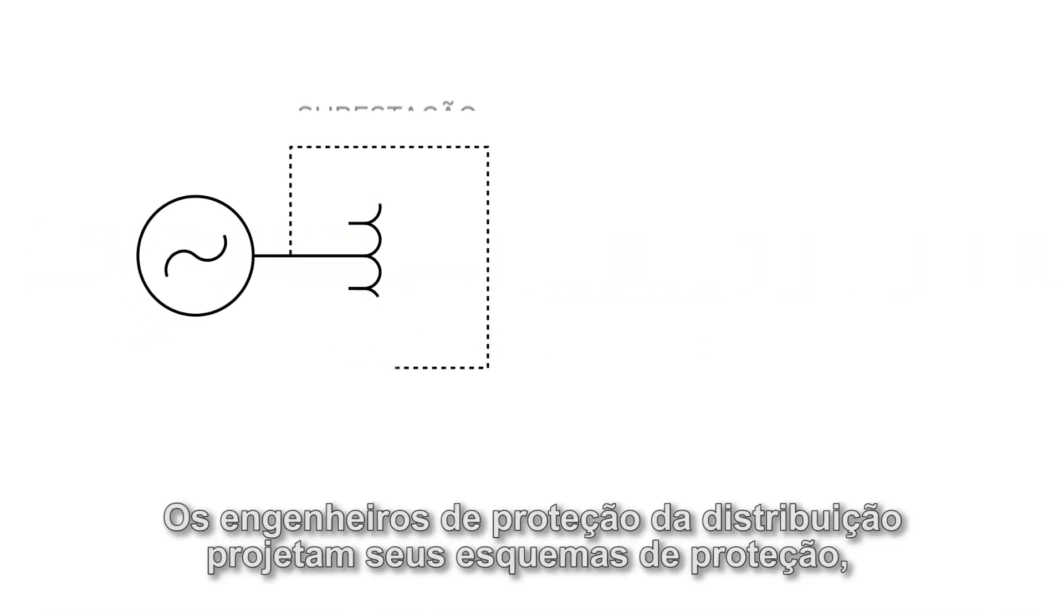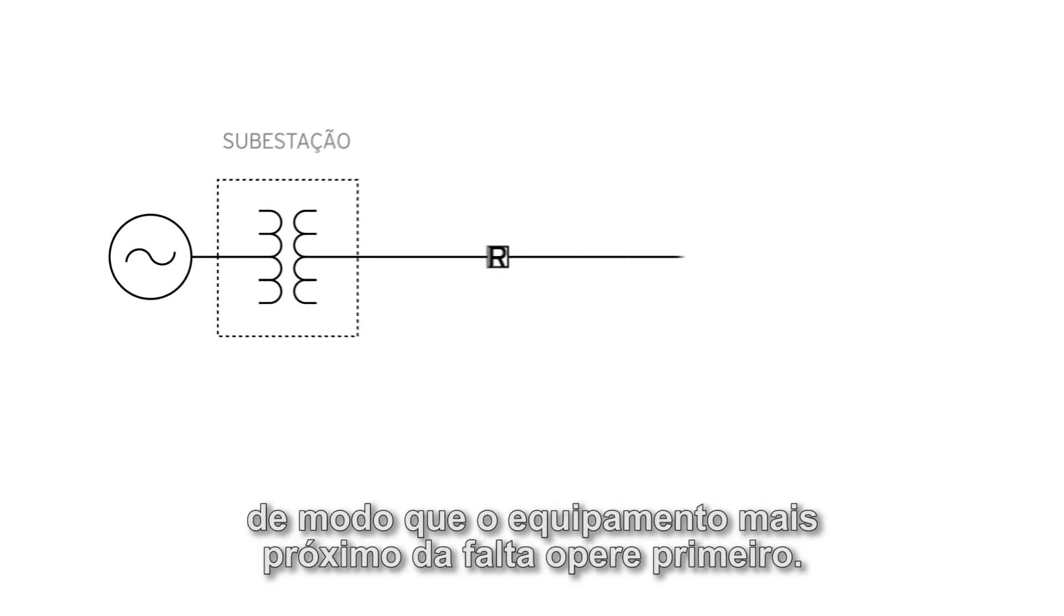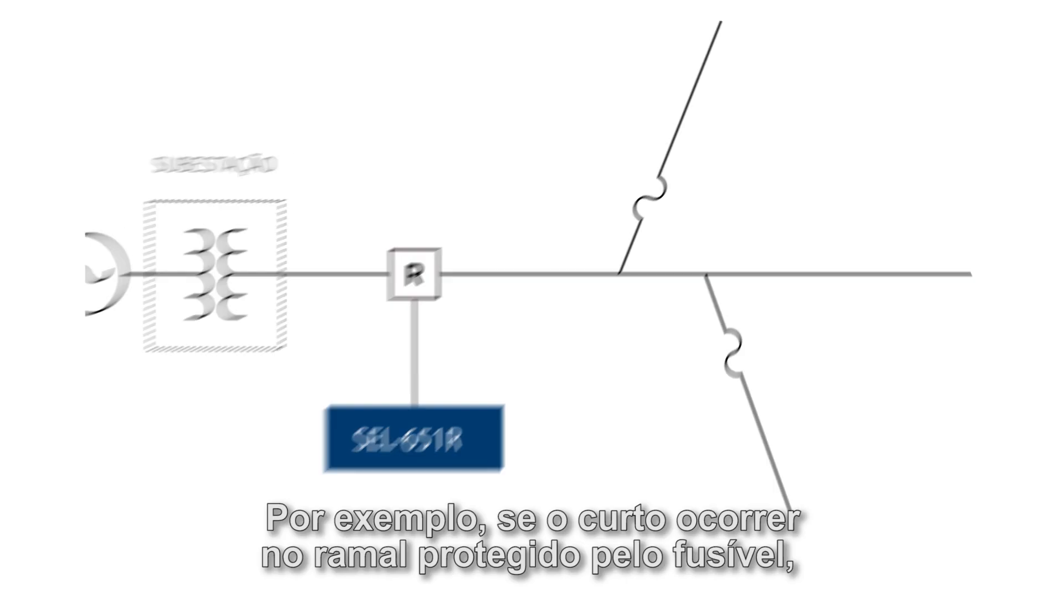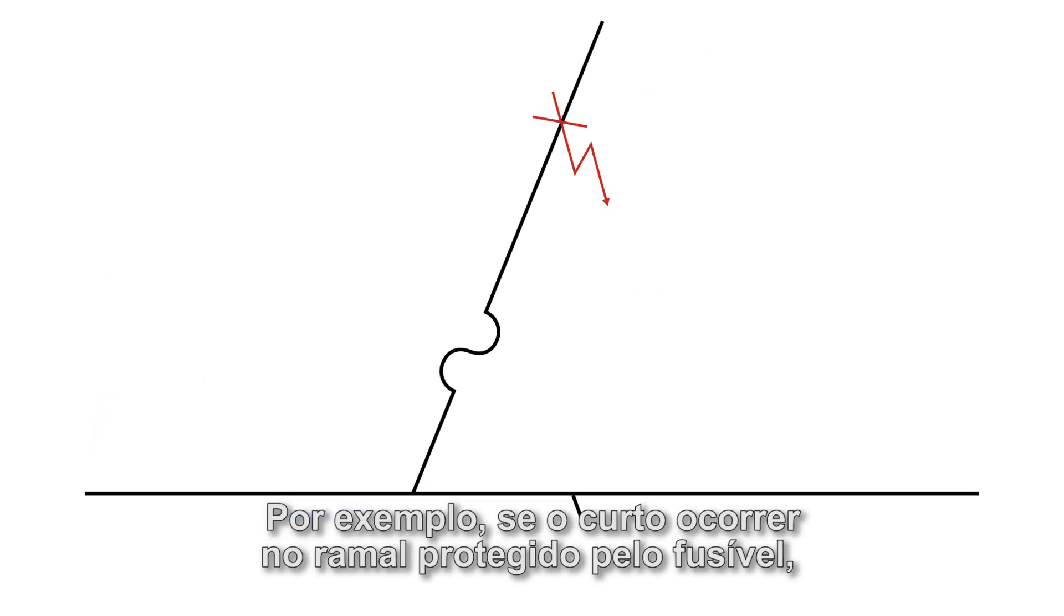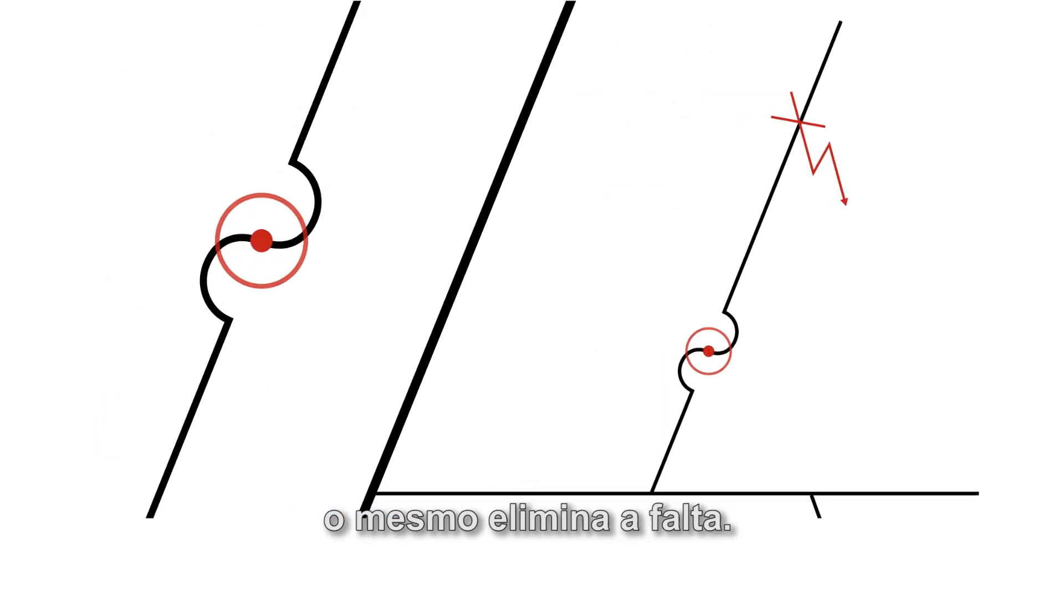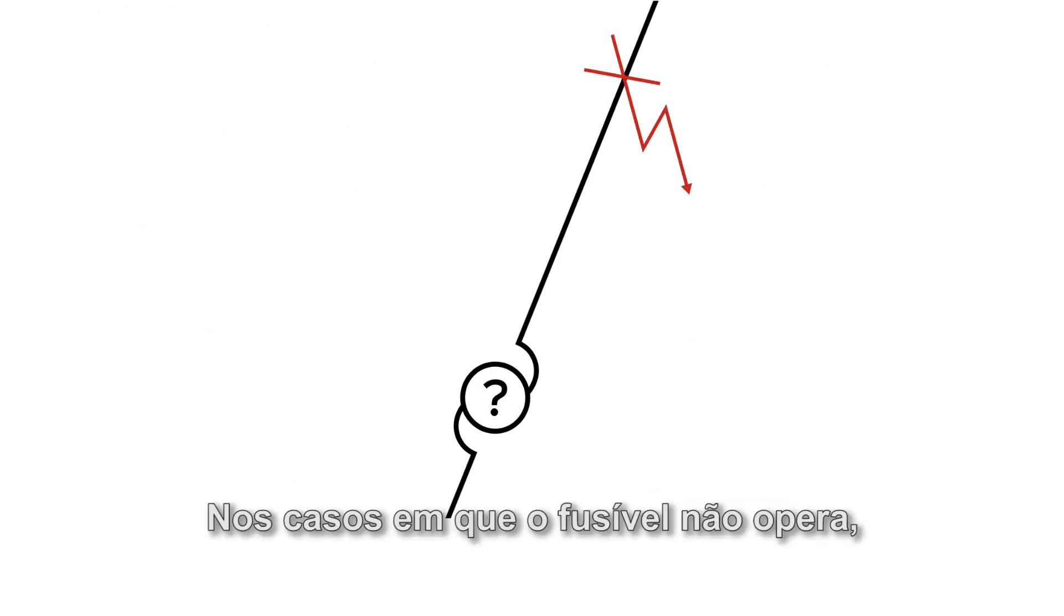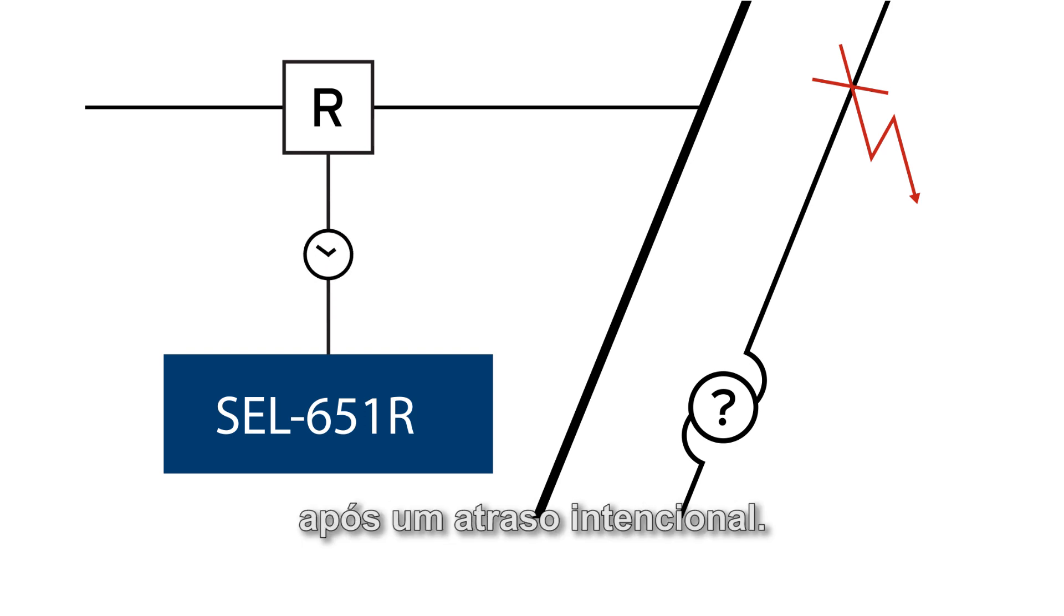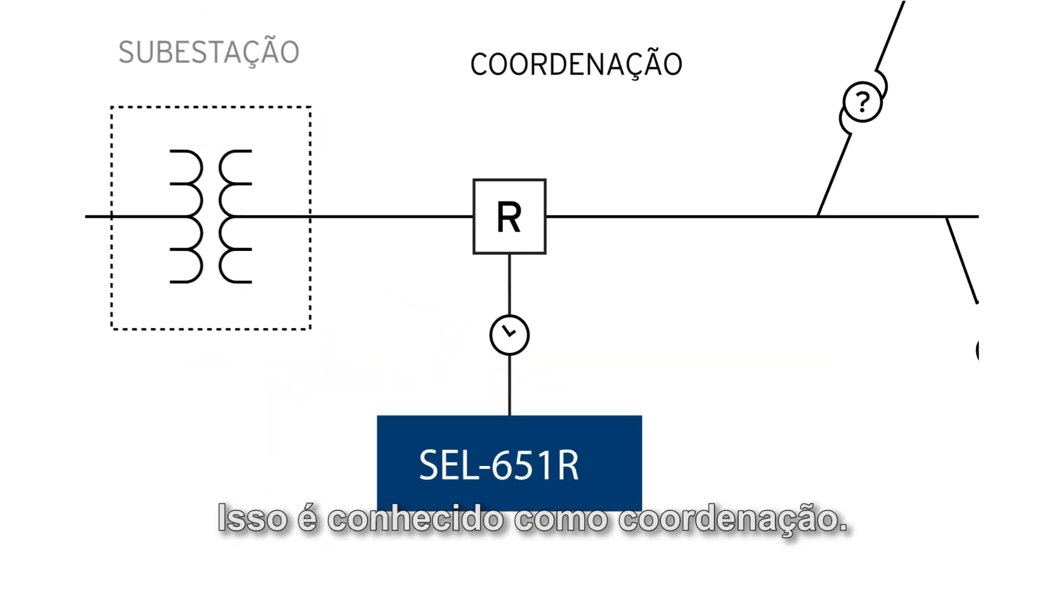Distribution protection engineers design their protection schemes such that the device that is closer to the fault operates first. For example, if the fault is on this fuse-protected tap, the fuse clears the fault. In cases where the fuse fails to operate, this fault is still cleared by the recloser and the recloser control after an intentional delay. This is known as coordination.